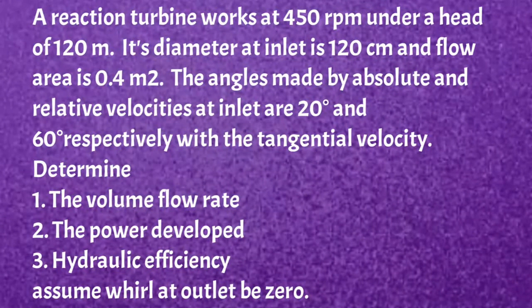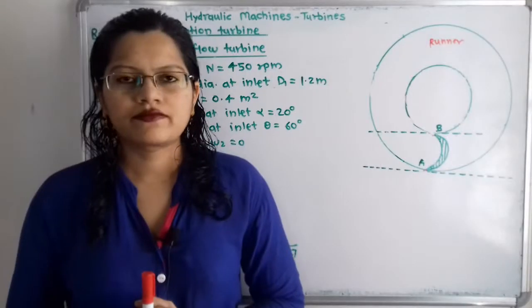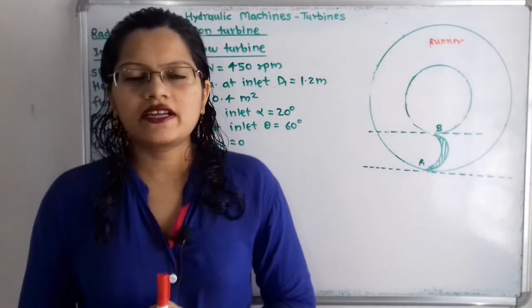A reaction turbine works at 450 rpm under a head of 120 meters. Its diameter at inlet is 120 centimeters and the flow area is 0.4 meter square. The angles made by absolute and relative velocities at inlet are 20 degrees and 60 degrees respectively with the tangential velocity. Determine: first, volume flow rate; second, power developed; third, hydraulic efficiency. Assume whirl at outlet to be zero.